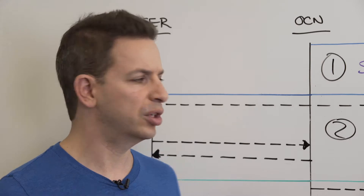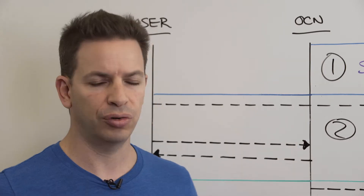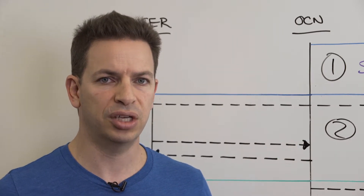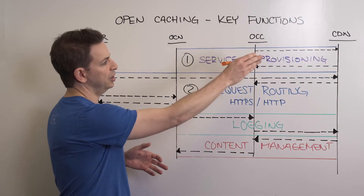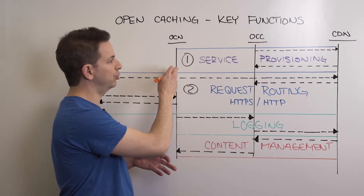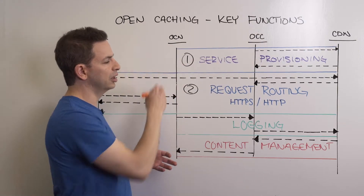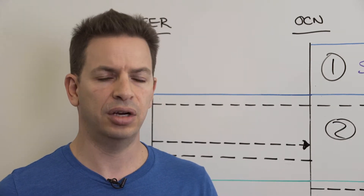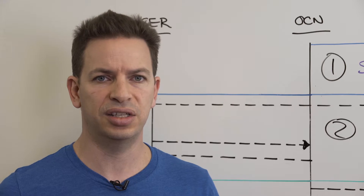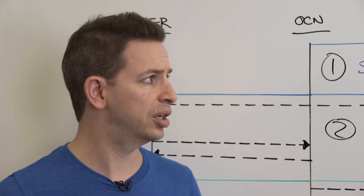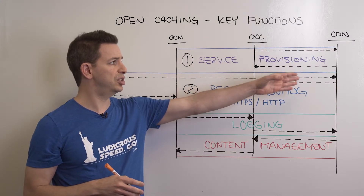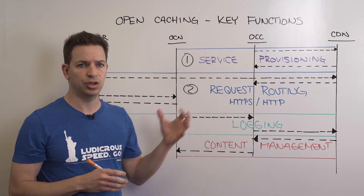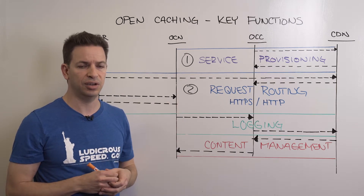As part of the SVA, two methods for request routing have been defined. The primary method is using HTTPS redirect, where a CDN node issues a 302 redirect destined at the given OCC. The secondary method is DNS CNAME delegation — delegation from the CDN into the CNAME for the various open caching systems in that given ISP.